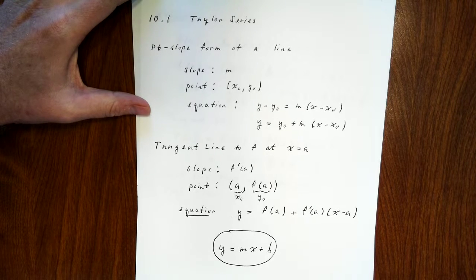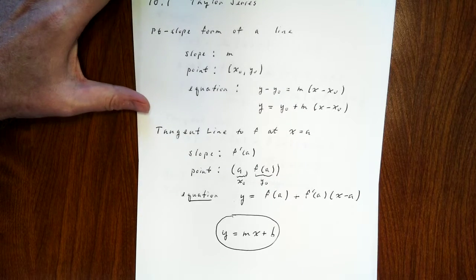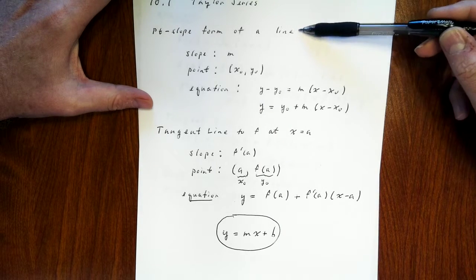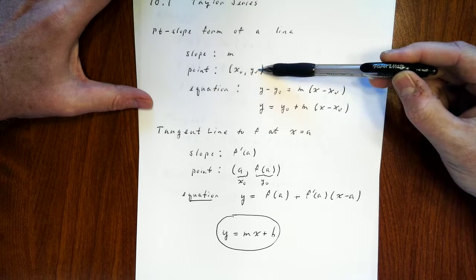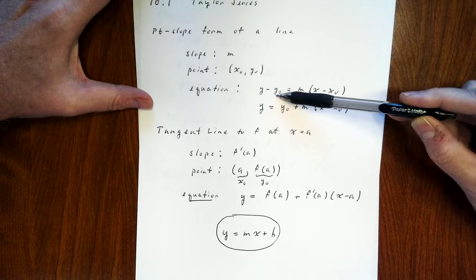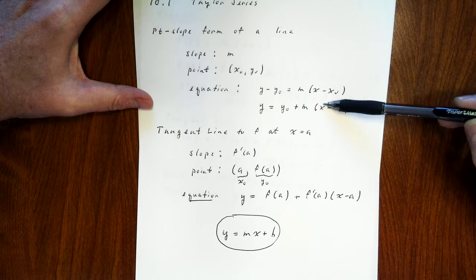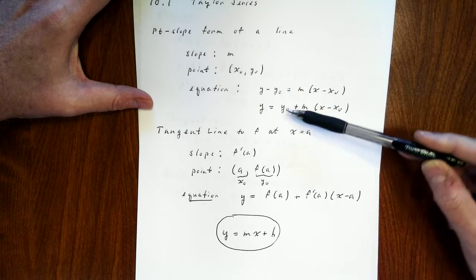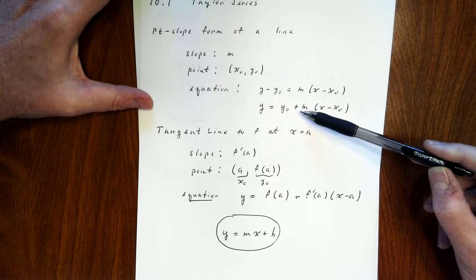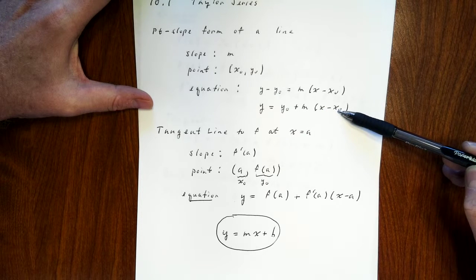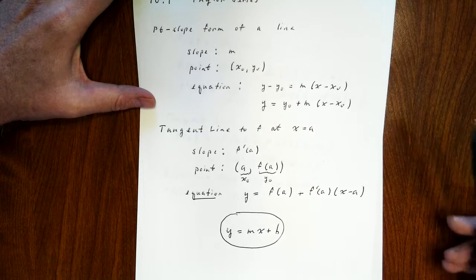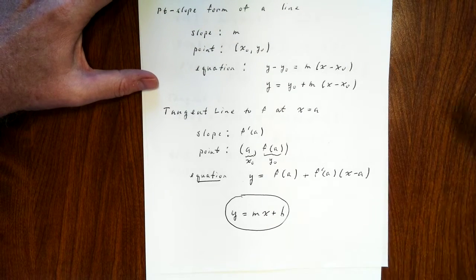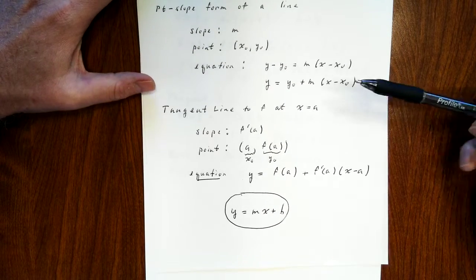This is section 10.1 of the text. The origins of the ideas in this chapter really go back to calculus 1 and the tangent line. Let's recall the point-slope form of the equation of a line. If we have a line whose slope is m and it passes through the point (x₀, y₀), then the point-slope formula is y minus y₀ equals m times x minus x₀, or equivalently y equals y₀ plus m times x minus x₀. In calculus, we emphasize the point-slope form because of the tangent line.